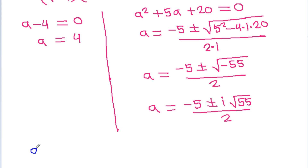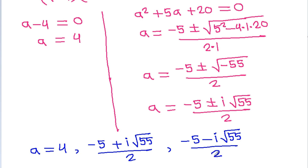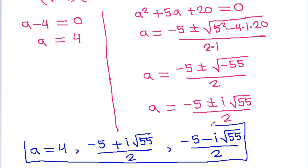So again we get the three values of a: a equals 4, a equals (minus 5 + iota√55) / 2, and a equals (minus 5 minus iota√55) / 2. These are the three values of a.